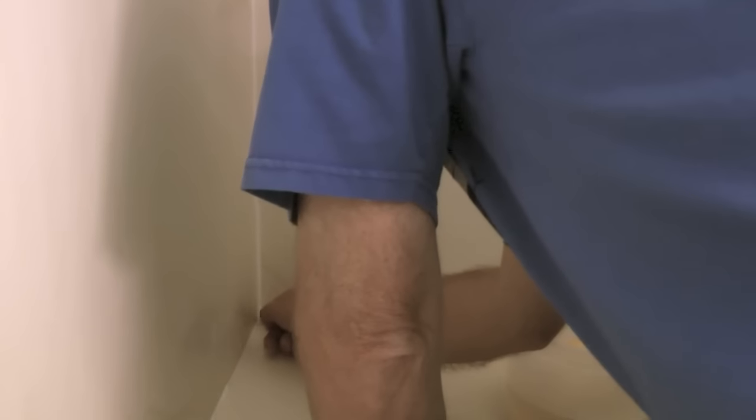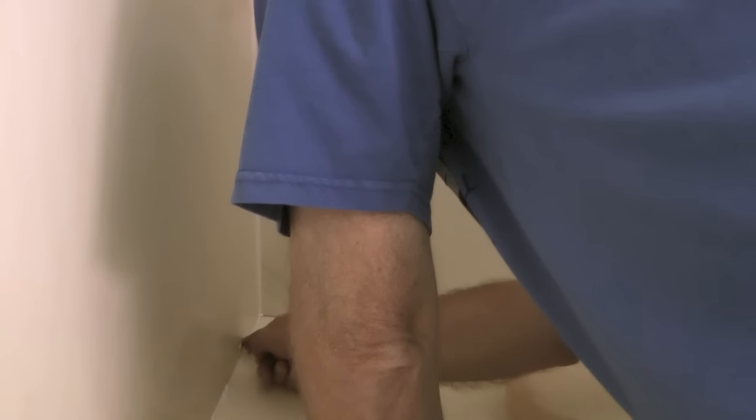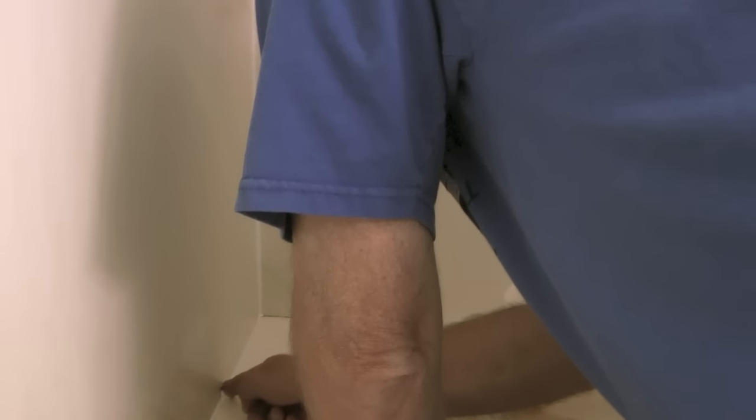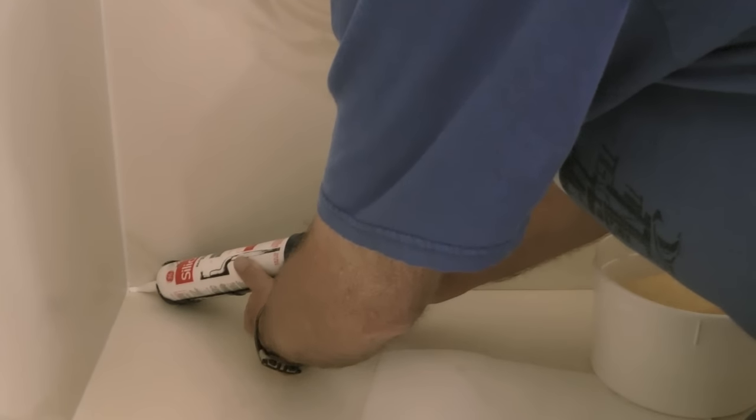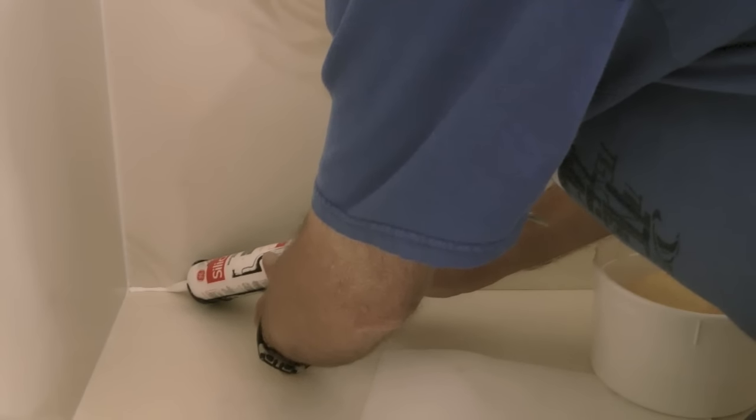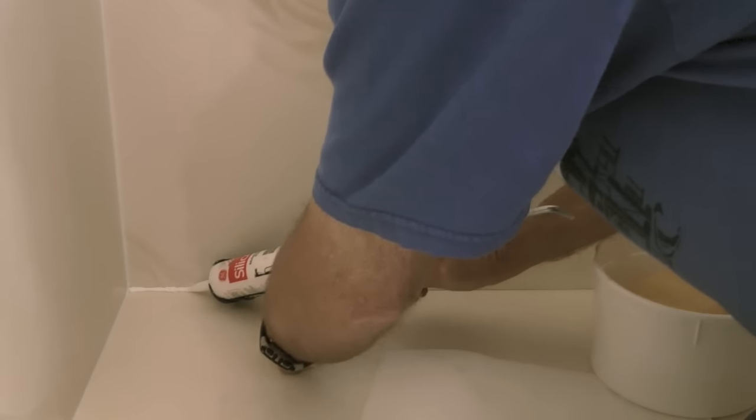Wipe the excess on a paper towel, redip my finger in the warm water and continue smoothing out the bead of caulk. Then I will repeat this process in all of the seams in the shower.